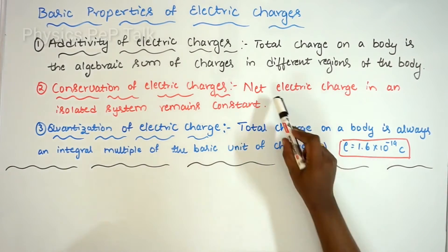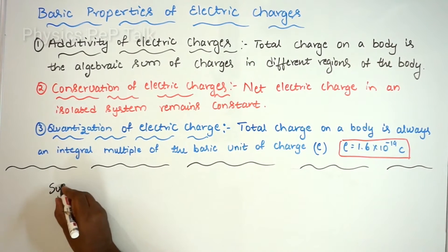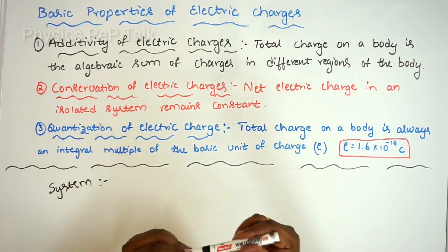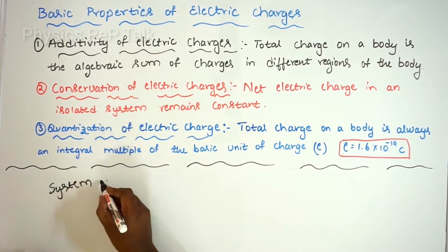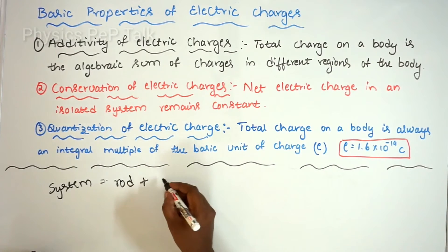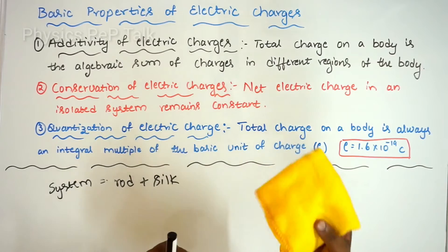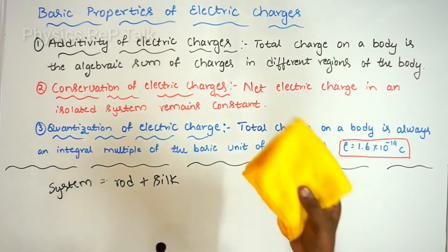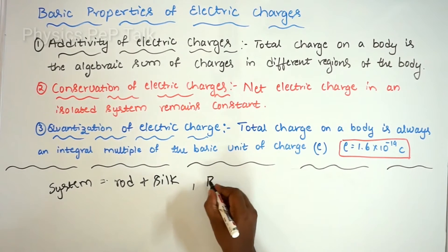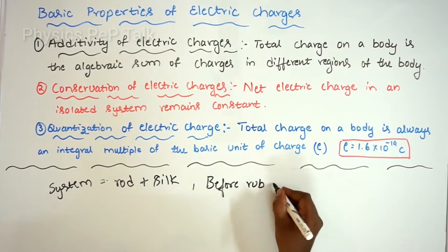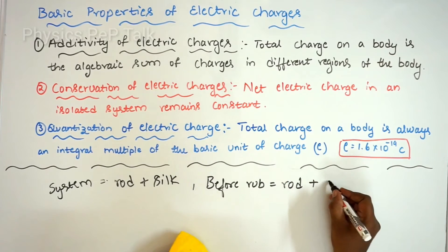Conservation of electric charges: the net electric charge in an isolated system remains constant. Consider a system of a glass rod plus silk cloth. Before rubbing, both the glass rod and the silk cloth have zero coulomb charge, so the total charge of the system is zero.